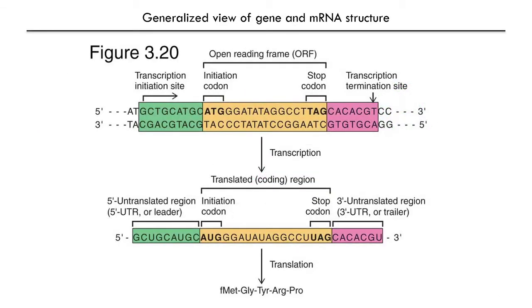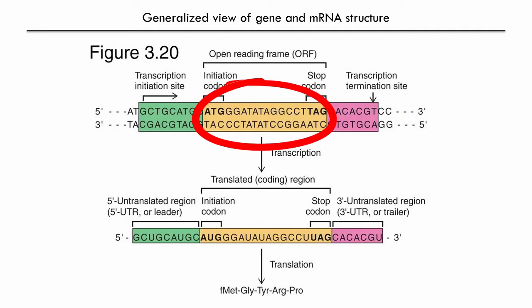We know that proteins are made up of amino acids that are linked together in sequence, and this is encoded in DNA. Here in figure 3.20 of your text, we have a generalized view of a protein coding gene, its transcribed mRNA, and the protein sequence that is produced. Features of the gene are illustrated, including the region of the gene that codes for protein, called the open reading frame, or ORF.